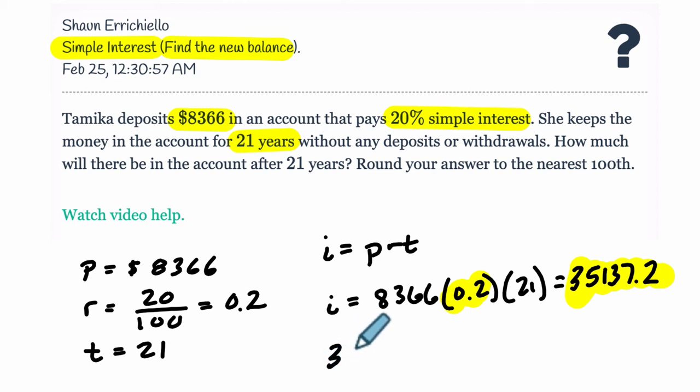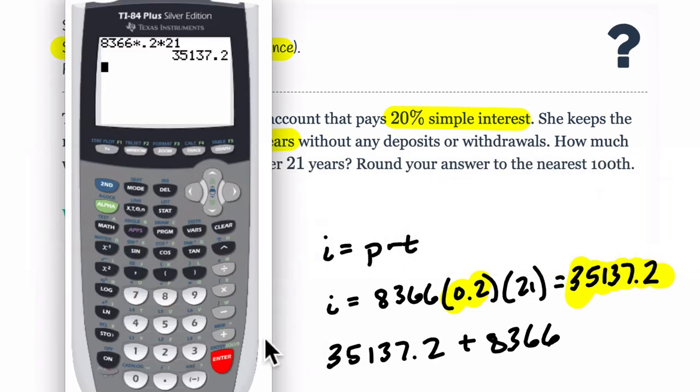So, 35,137.2 plus our principal, which is 8366. And that will get us our total. Let's do that. 35,137.2. I wrote just a 2 there. So, 0.2 plus 8366. $43,503.20.